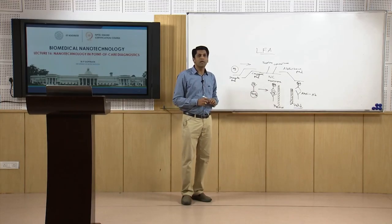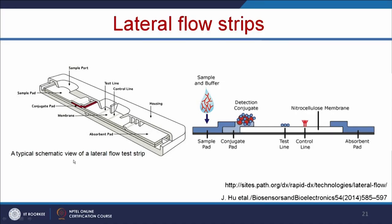This is a typical schematic view of a lateral flow test strip arrangement. If you open the kit, you will have a step-like arrangement: sample pad, then below that the conjugate pad, followed by the nitrocellulose membrane. The nitrocellulose membrane has a test line containing antibody specific for your antigen, and a control line with antibody specific for the conjugated antibody. And finally, the absorbent pad observes the excess sample.